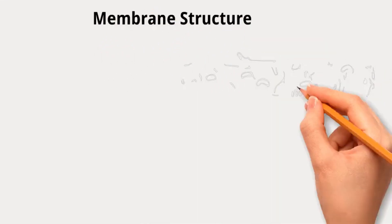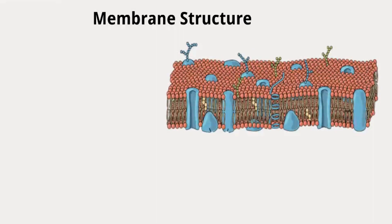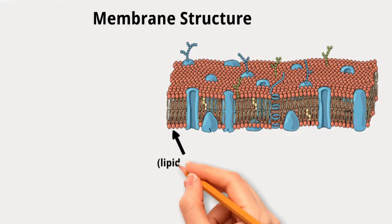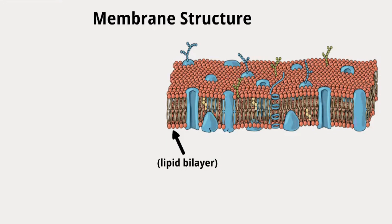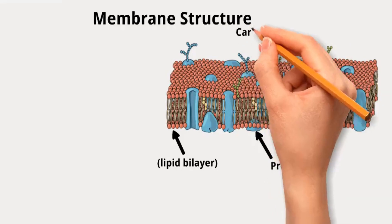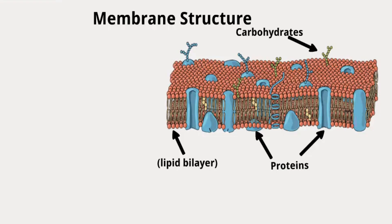Let us now move to explain the membrane structure. Cell membranes are made up of lipids and proteins held together by non-covalent bonds. The core of the membrane consists of a double layer of lipids — the lipid bilayer — which provides structural support and acts as a barrier against the movement of water-soluble materials. Proteins perform various specific functions, and each cell type has a unique set of membrane proteins. Membranes also contain carbohydrates attached to lipids and proteins, which play a role in cell recognition and communication.